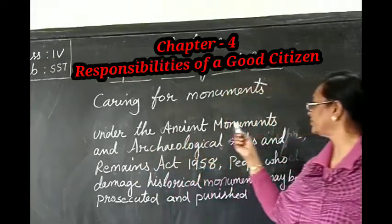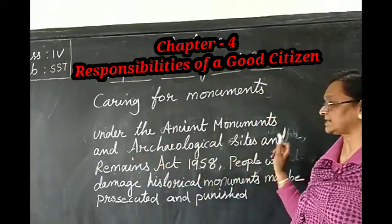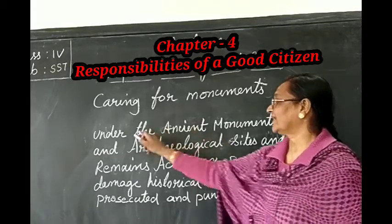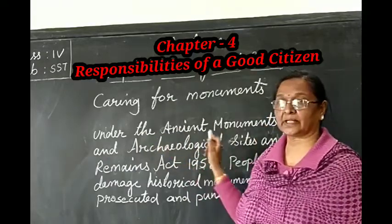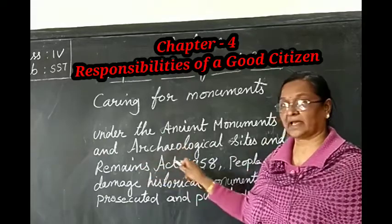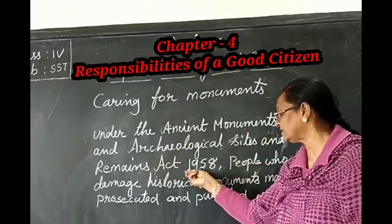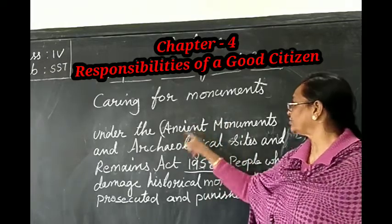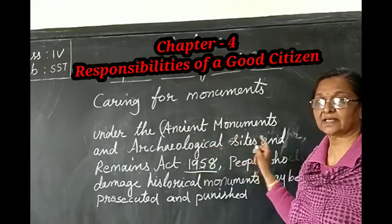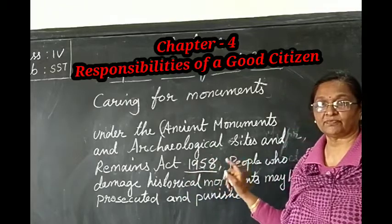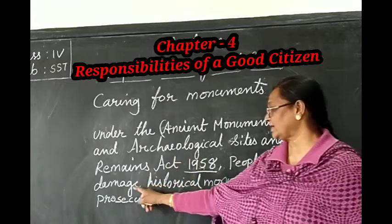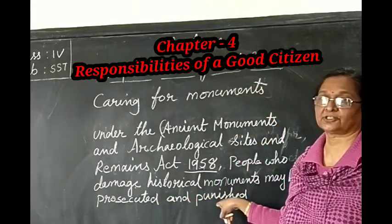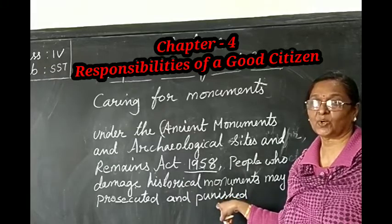Under the Ancient Monuments and Archaeological Sites and Remains Act — what year is it? The Ancient Monuments and Archaeological Sites and Remains Act of 1958. This act says that people who damage historical monuments may be prosecuted and punished. So it is against the law of our country to do any damage to these monuments.